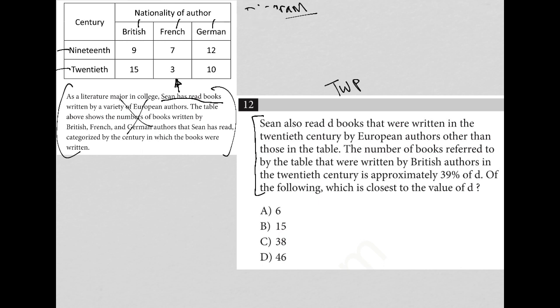Okay, so basically, let me just erase this. It's kind of like if I extended my table and said I had country X, right, this unknown country that's in Europe, and we're going to add D books to the 20th century. All right, so that's my translation of that first sentence. That's my TWP.